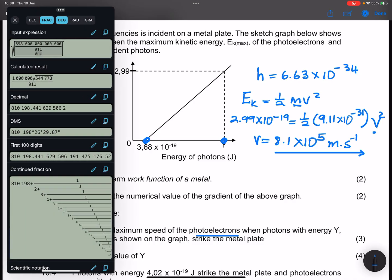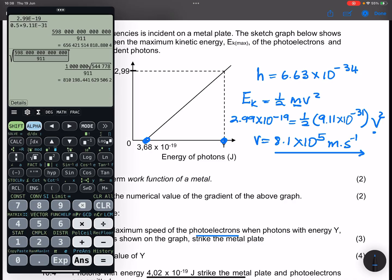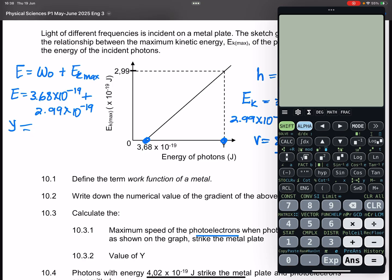Let's do this. So we're going to get 3.68 plus 2.99, and that gives me 6.67 times 10 to the power negative 19 joules.